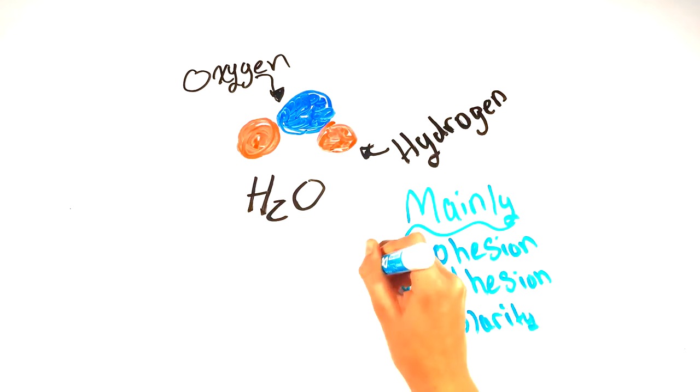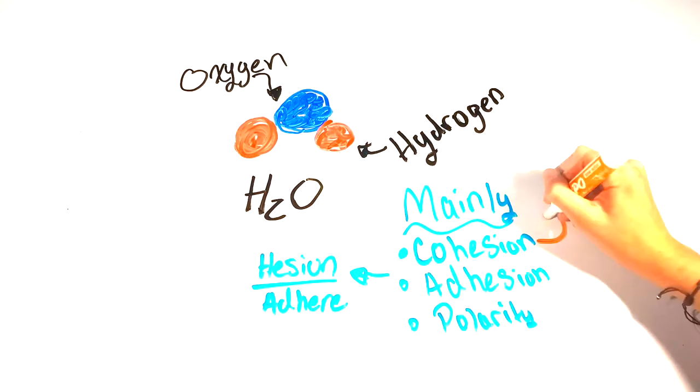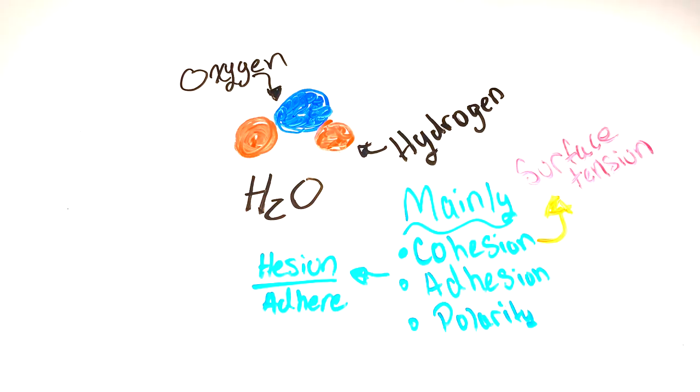Cohesion also creates surface tension, which is why if you fill a spoon with water drop by drop, the water volume will actually be bigger than the spoon surface before the water falls off.